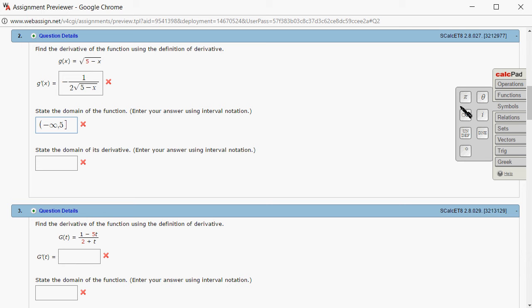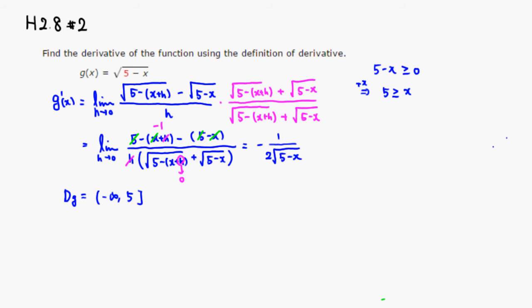And state the domain of its derivative. So this is going to be actually a little bit different, because derivative is this guy right here. Since this is a denominator, we have to make sure that the denominator here is non-zero. And from there, we can find, divide by 2, and square root of 5 minus x cannot be equal to 0.